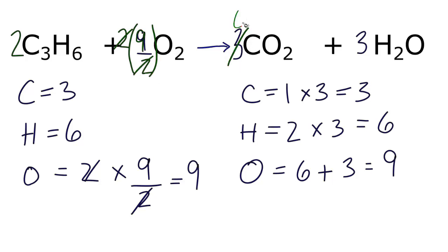Two times three, that becomes six. Two times three here, six. And we end up with two C3H6 plus nine O2 yields six CO2 plus six H2O.